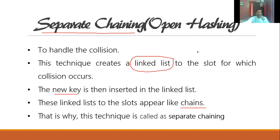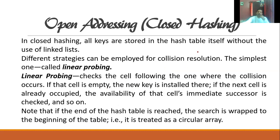On the other side, there is closed hashing, also called open addressing. Under closed hashing, we concentrate on two major techniques: linear probing and double hashing. In closed hashing, all keys are stored in the hash table itself without the use of a linked list. When collision happens, we do not create a linked list — all information is stored in the hash table.